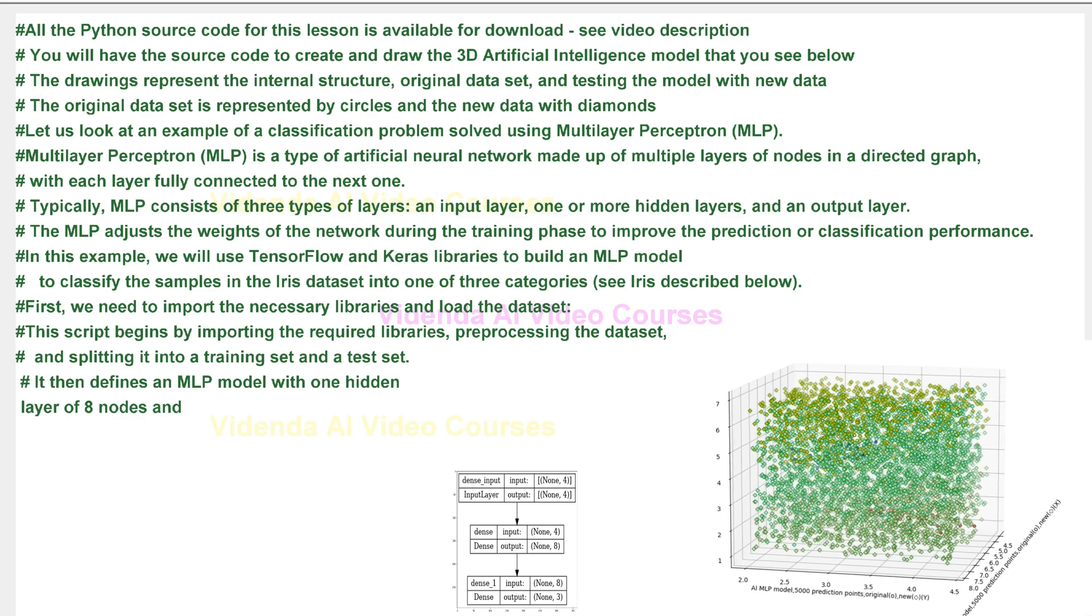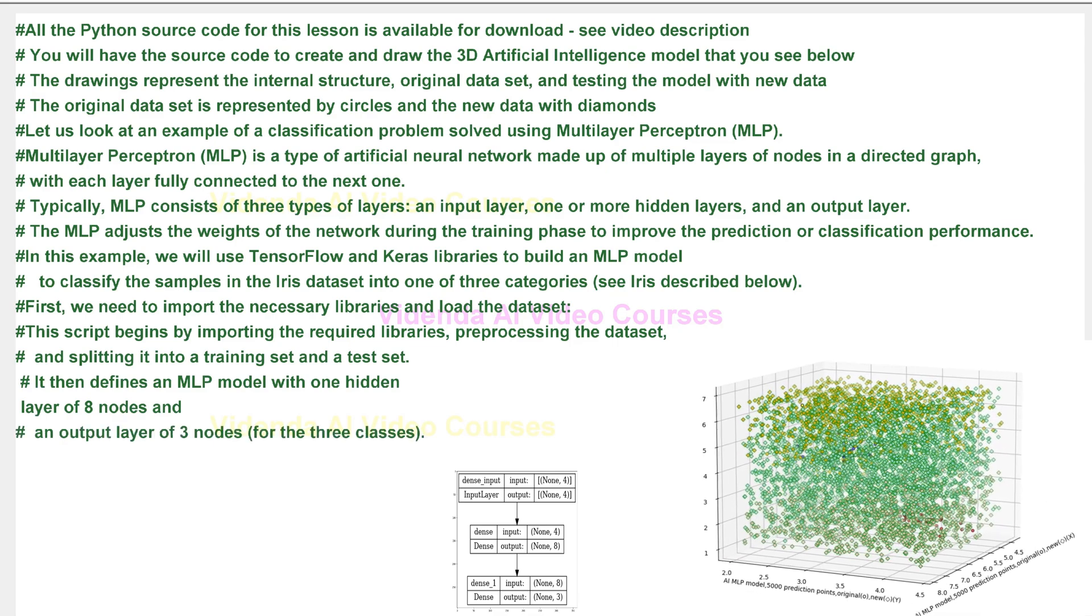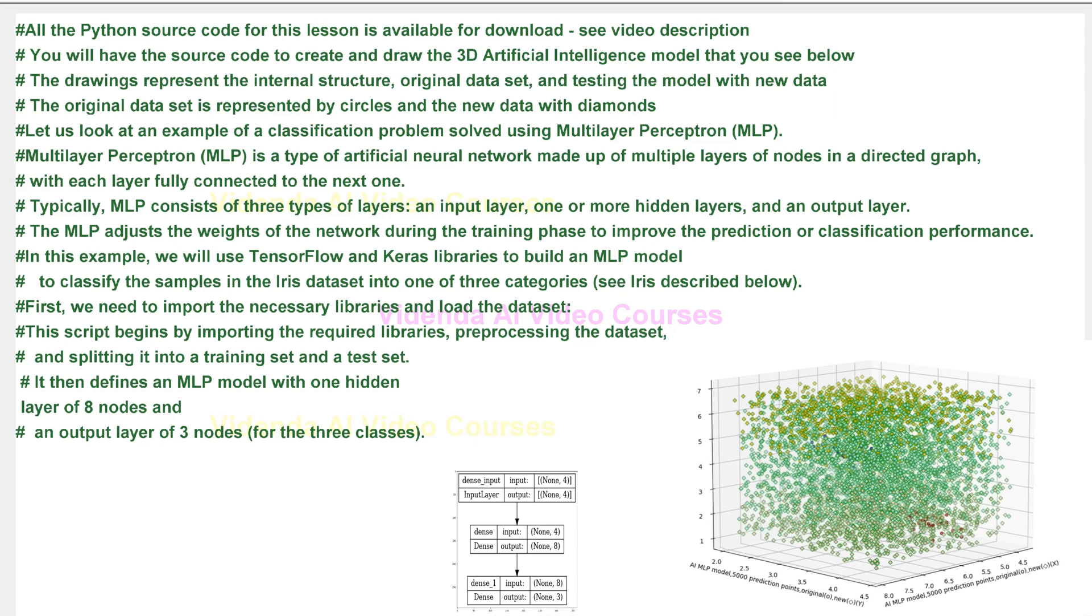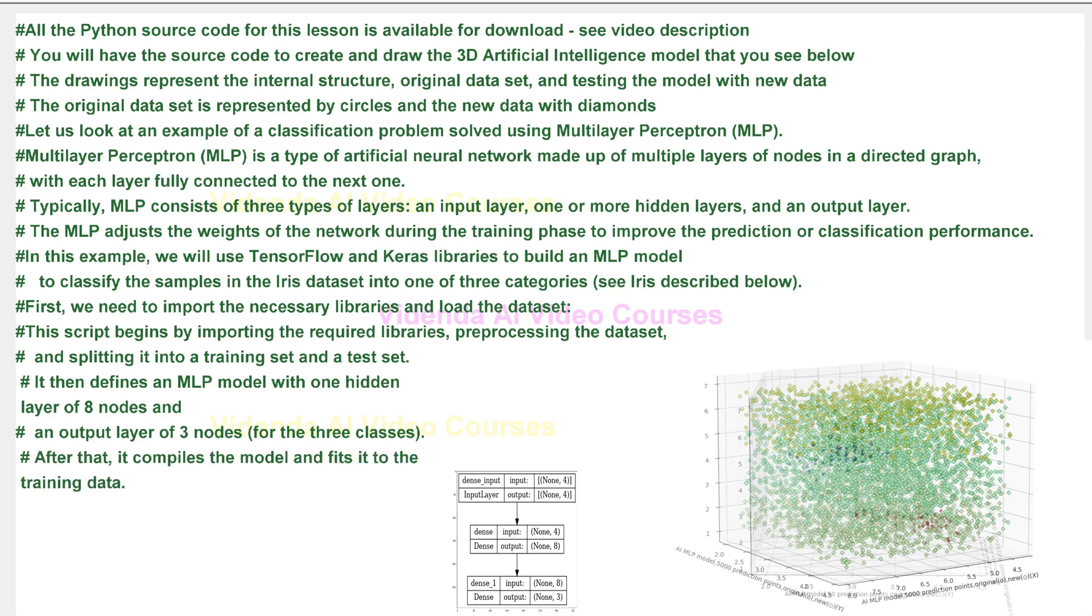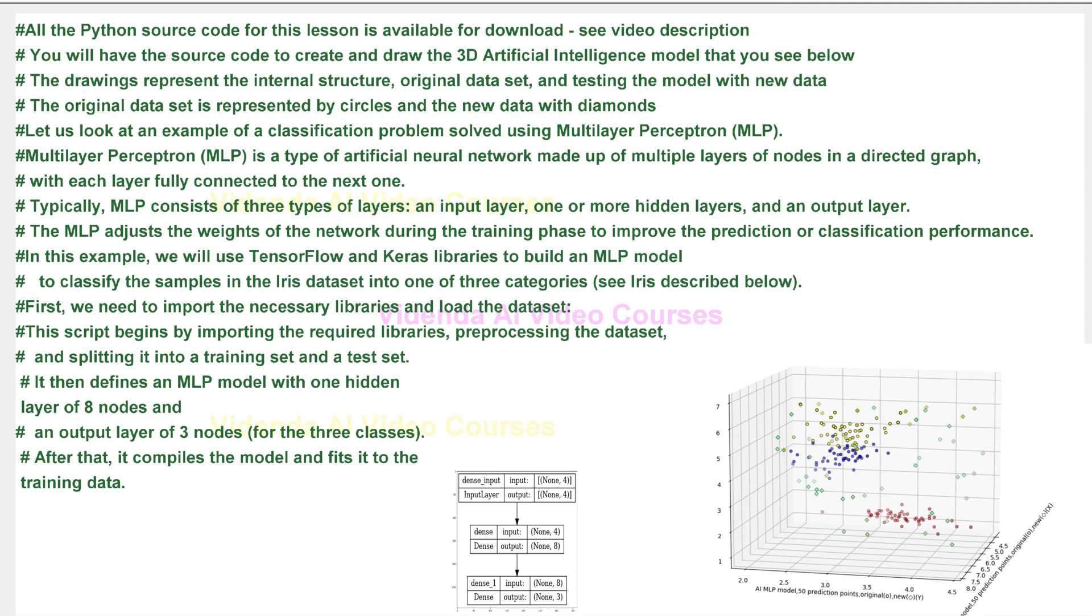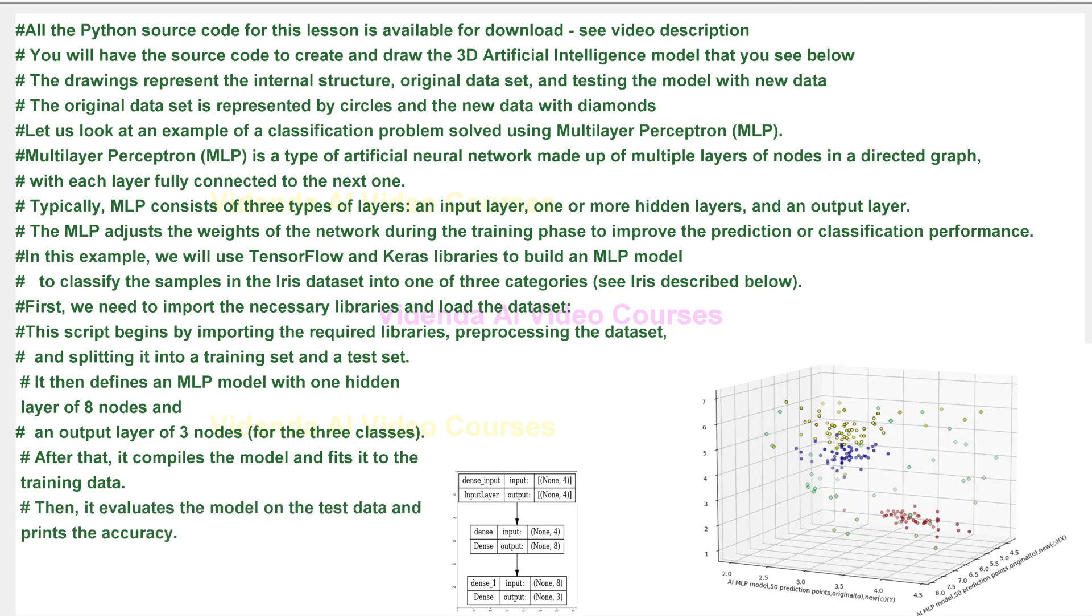It then defines an MLP model with one hidden layer of eight nodes and an output layer of three nodes for the three classes. After that, it compiles the model and fits it to the training data.